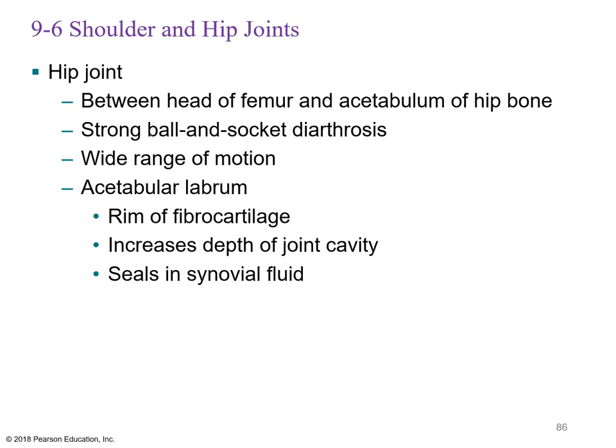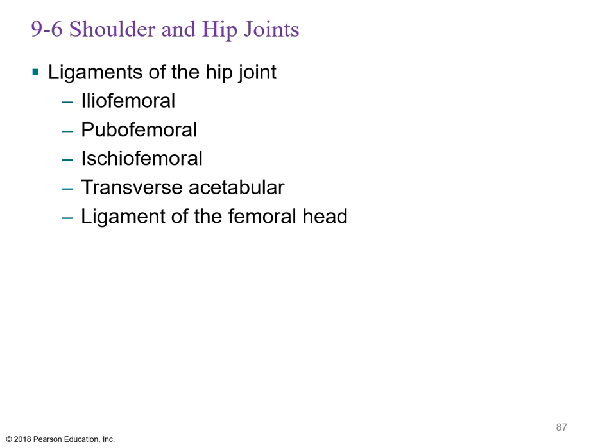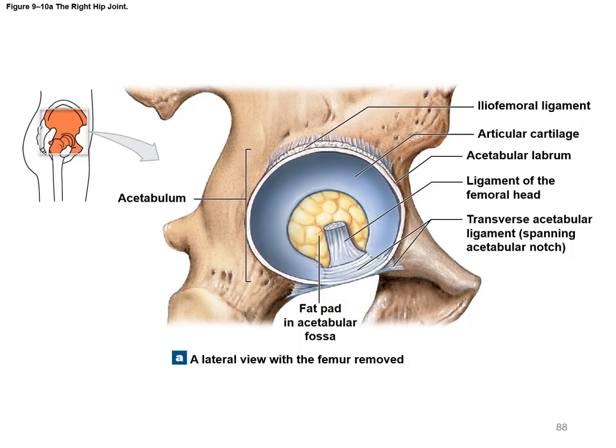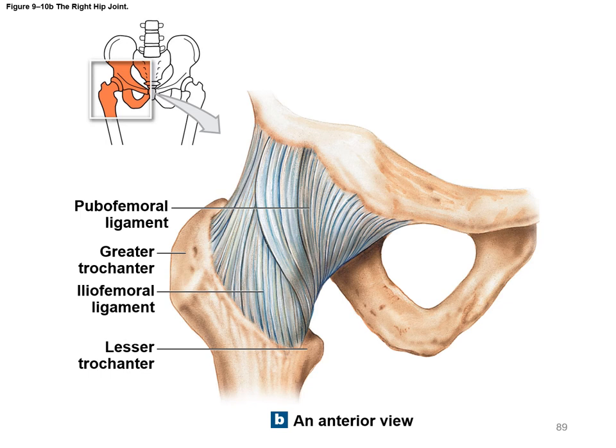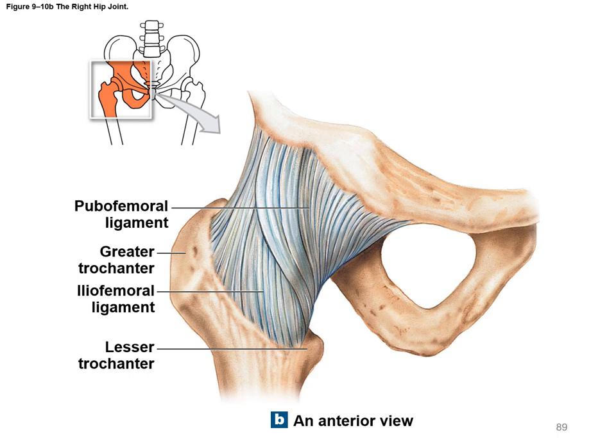The hip joint — between the head of the femur and the acetabulum — is a strong ball-and-socket diarthrodial joint with a wide range of motion, though less than the shoulder. It has an acetabular labrum of fibrocartilage to increase depth and seal synovial fluid. Ligaments include the iliofemoral, pubofemoral, ischiofemoral, transverse acetabular, and the ligament of the femoral head, which attaches to the fovea capitis of the femur.